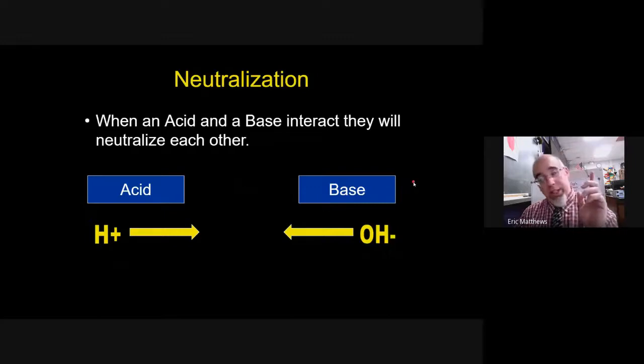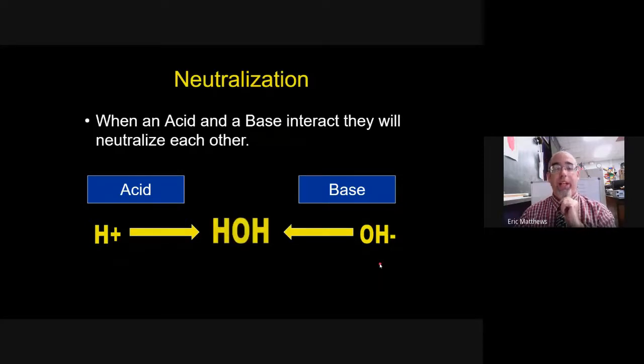Interestingly, if you take an acid and a base of the same concentration, we can bring them together in a process called neutralization. If you take an H and an OH and you put those together, what do they form? HOH. If we simplify that, it turns into H2O. So when an acid and a base combine, they will neutralize one another and turn into water. Perfect.